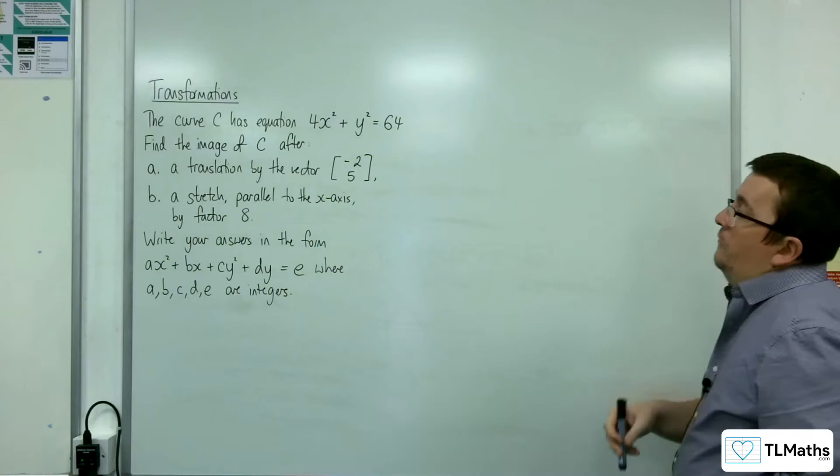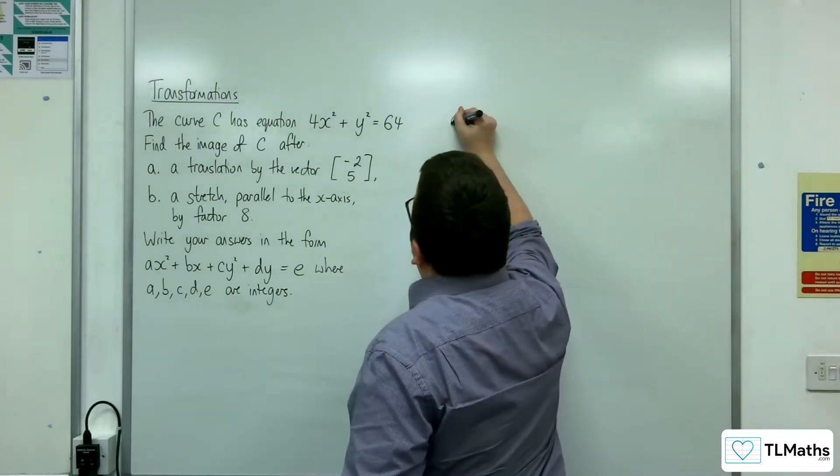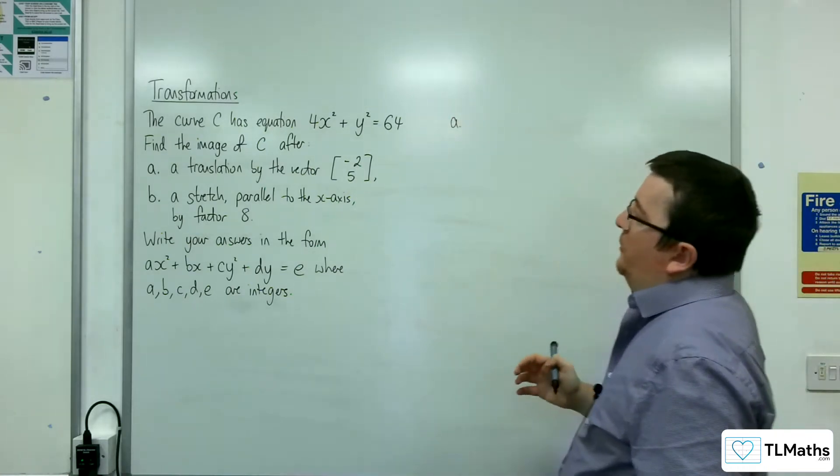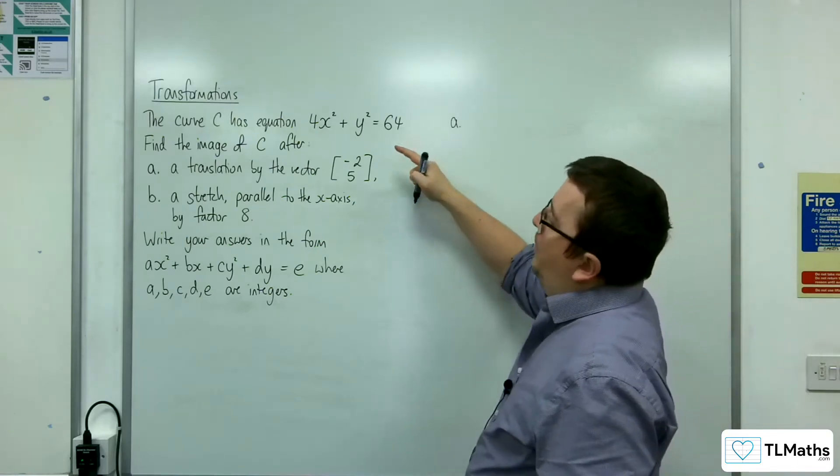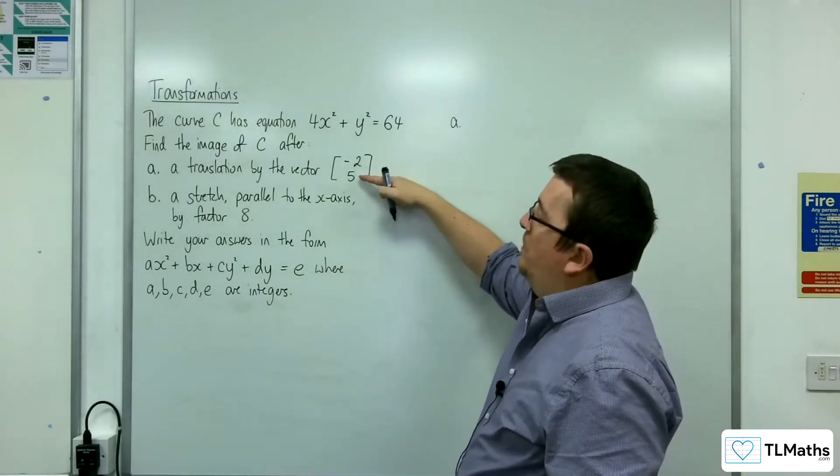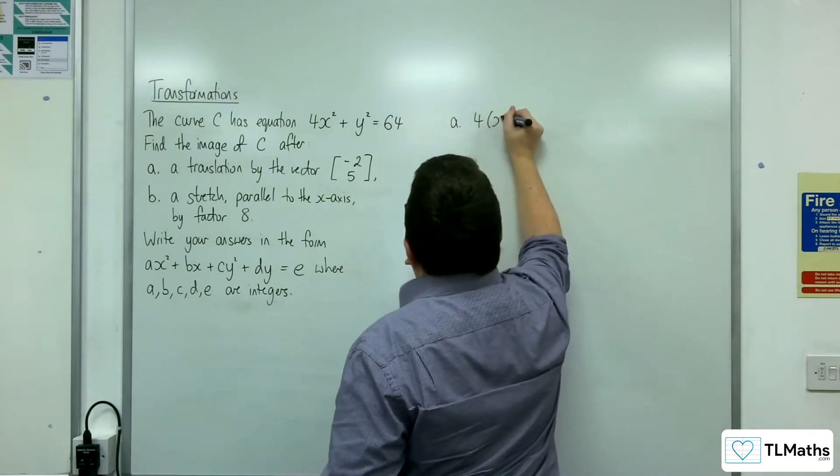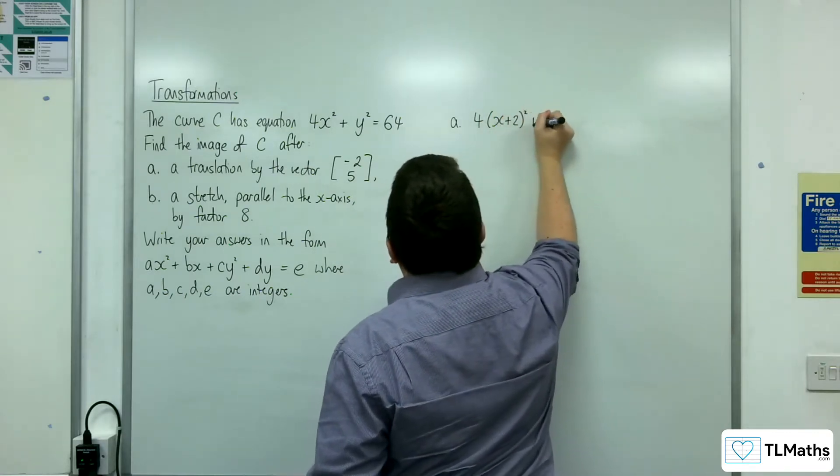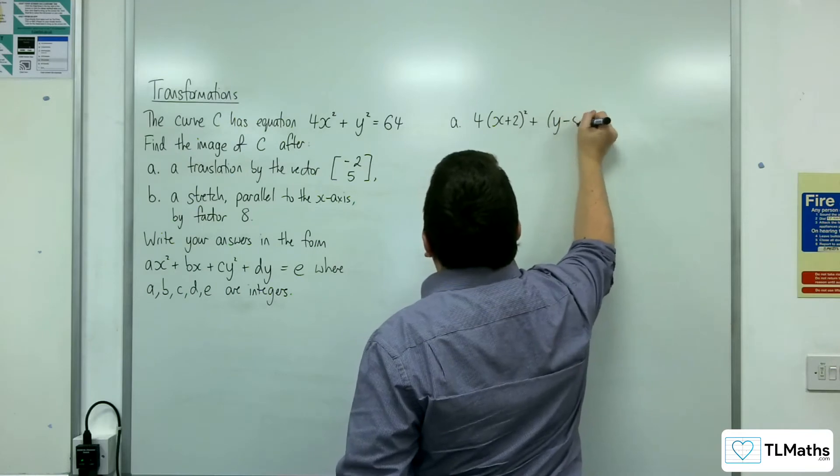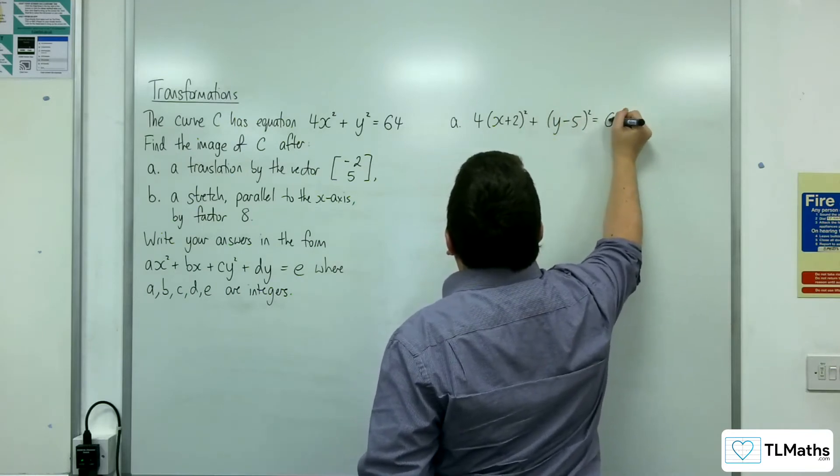Okay, so for part A then, if we're going to be translated by the vector minus 2, 5, we've got to replace the x with x plus 2, and we've got to replace the y with y minus 5. So 4 lots of x plus 2 squared plus y minus 5 squared is equal to 64.